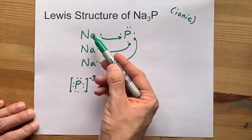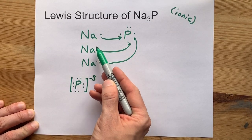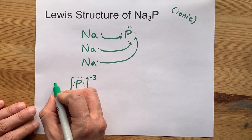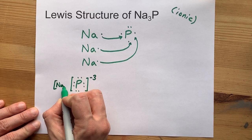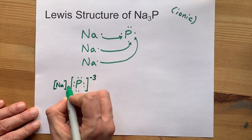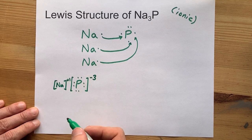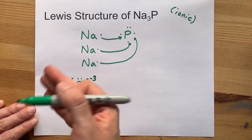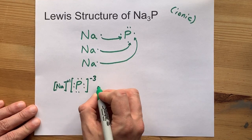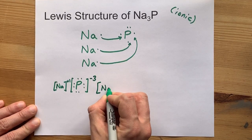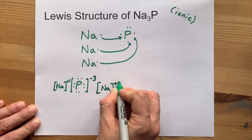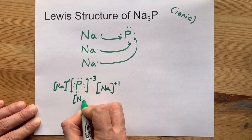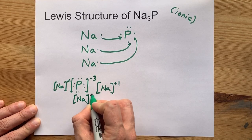Now I'm going to have to draw my 3 sodiums, but they gave away their electrons. So I'm going to draw Na with no dots around it and a plus 1 charge. That plus 1 represents the fact that it lost an electron. But we're actually going to need 3 of those. So here's my second one. And I'm just going to put my third one down here. I like to spread them around.